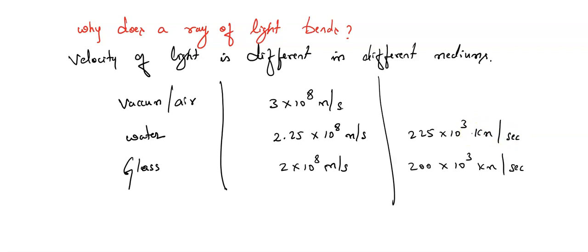Just remember these values. The speed of light is different in all mediums. So this is the reason bending of light takes place. If they ask why a ray of light bends, the answer is: the speed of light, or velocity of light, is different in different mediums — because of that the ray of light bends.